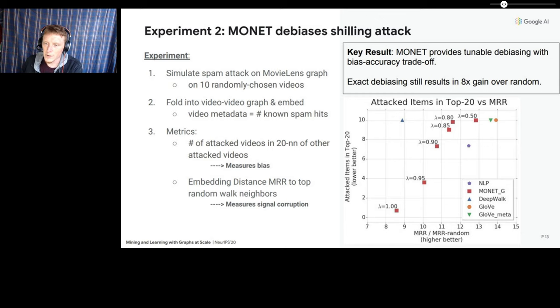So in this experiment, we were able to measure the trade-off between debiasing and embedding efficacy using two metrics. First, to measure debiasing, we count the number of targeted videos in each of the top 20 nearest embedding distance neighbors of the other target videos. Since the shilling user's intent is to create artificial similarity between those videos, the lower this count, the better an embedding method has debiased the shilling signal. Secondly, on the other hand, we compute the mean reciprocal rank of the embedding distance neighbors of all videos with respect to their neighbors in the random walk training data. The higher this metric over random baseline MRR, the better the embedding method has encoded the graph signal. So this is a measure of embedding accuracy.